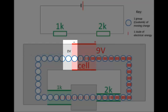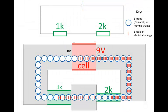Charges always have to return to the negative terminal with 0 volts, because the voltage — we could also call it the potential — at the negative terminal is always 0 volts. That is one of the rules of electricity: the charges always have to return to the negative terminal of the cell with 0 volts.